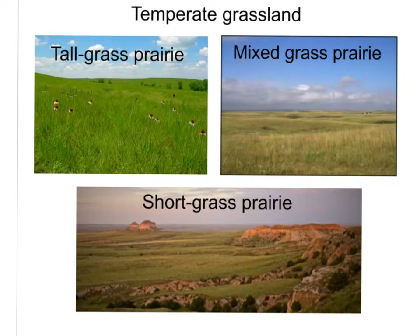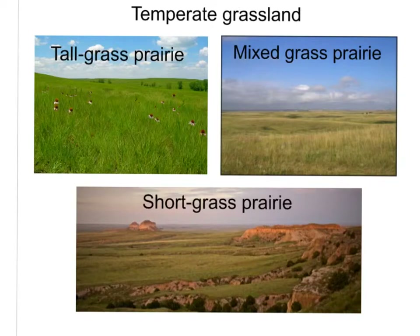Temperate grassland is another biome. Prairies in North America are great examples of temperate grasslands, and they're very similar to savannas. One of the main differences is that in temperate grasslands, trees are found only near streams. Temperate grasslands typically have very rich soil, and just east of the Rocky Mountains we have a lot of temperate grassland.